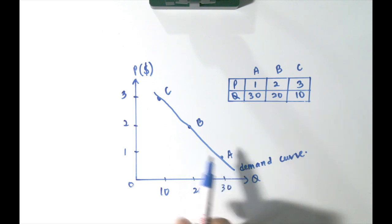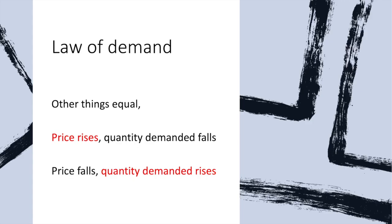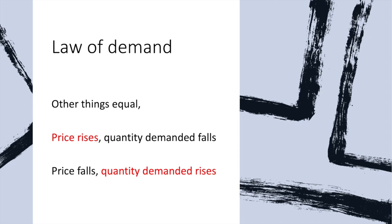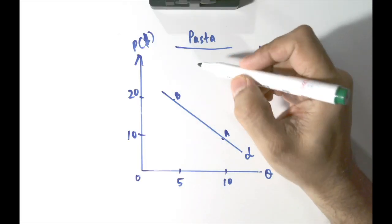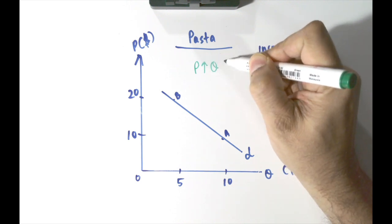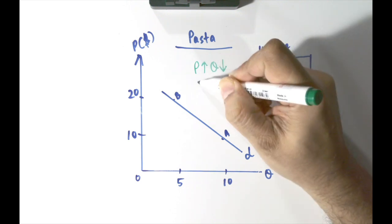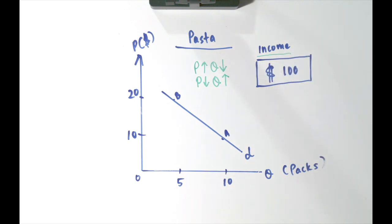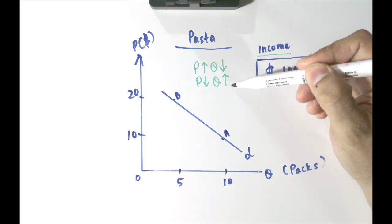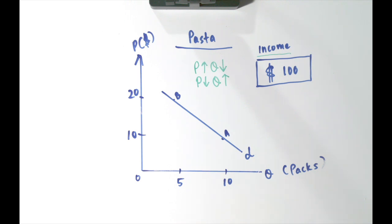It has a negative relationship between price and quantity. So what does the law of demand say? Other things equal, if price rises, quantity demanded falls. If price falls, quantity demanded rises. There are two important concepts to understand why there is a negative relationship: the first is the income effect, and the second one is the substitution effect.